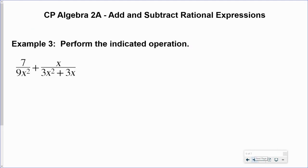Example 3 asks us to perform the indicated operation, which is to add 7 over 9x squared plus x over 3x squared plus 3x. The denominators are not the same — they're unlike denominators — so we're going to have to find a common denominator in order to add these two fractions together.